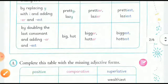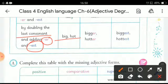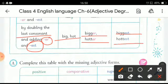The next rule is: double the last consonant and add -er and -est to the positive word. For the word 'big', double the last consonant and add -er to form 'bigger' and -est to form 'biggest'. In the same way, 'hot' becomes 'hotter' and 'hottest'.